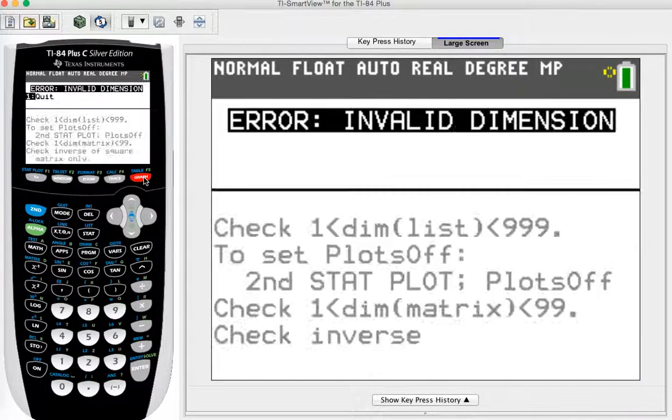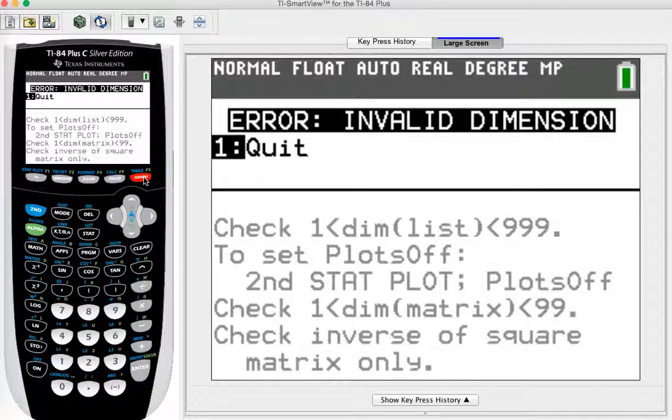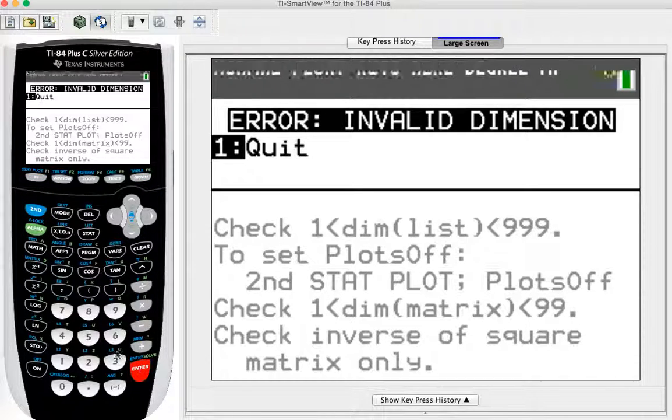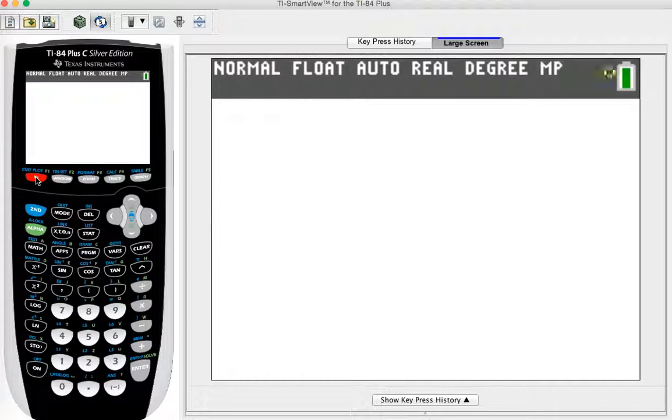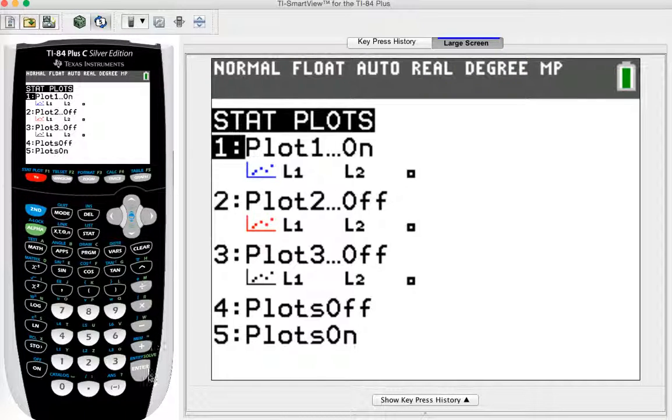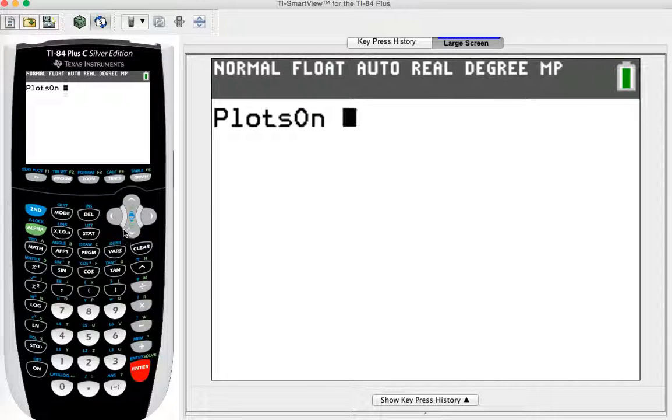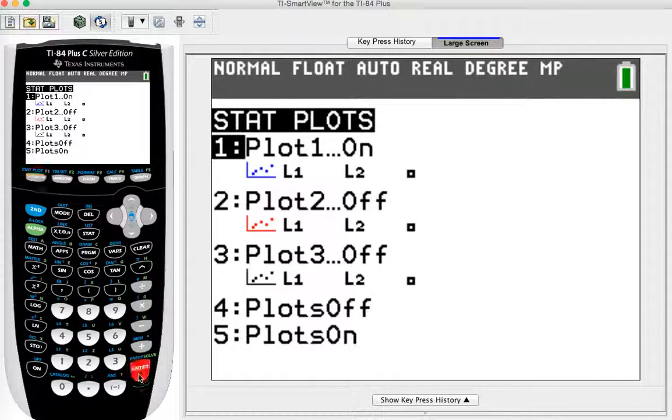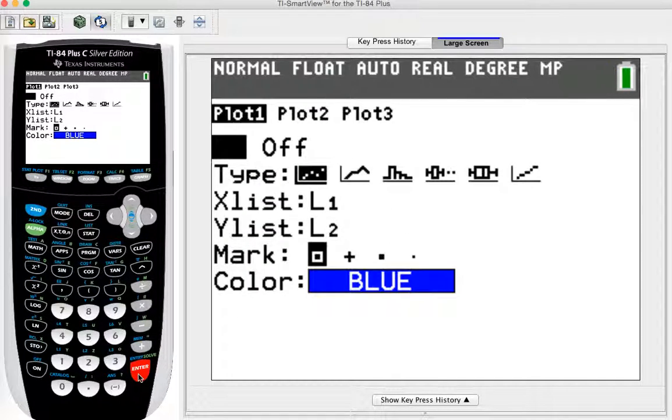And now I hit graph. Oh, no. What happened? I know what it is. I have to hit second to get back to my stat plots. I want 5 off. Let me make sure that is off. So you shouldn't have any on. They should all be off. I think that didn't do it.